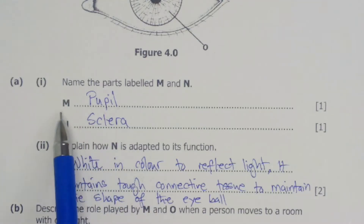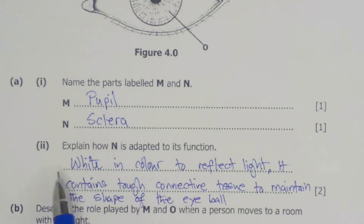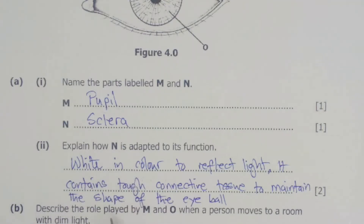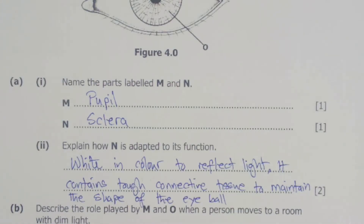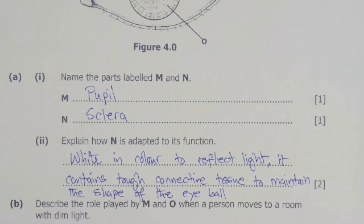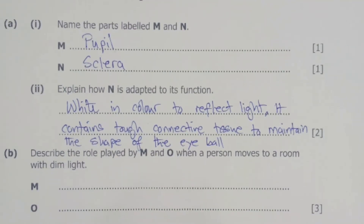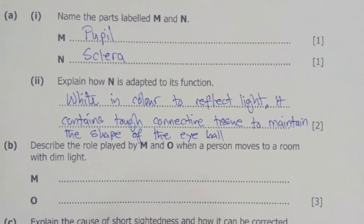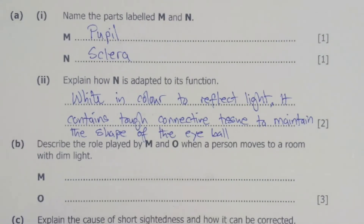So these were the solutions to question number A1 and A2. The parts: M is the pupil, N is the sclera. The adaptations of the sclera are that it is white in color to reflect light, and it also contains tough connective tissue to maintain the shape of the eyeball.